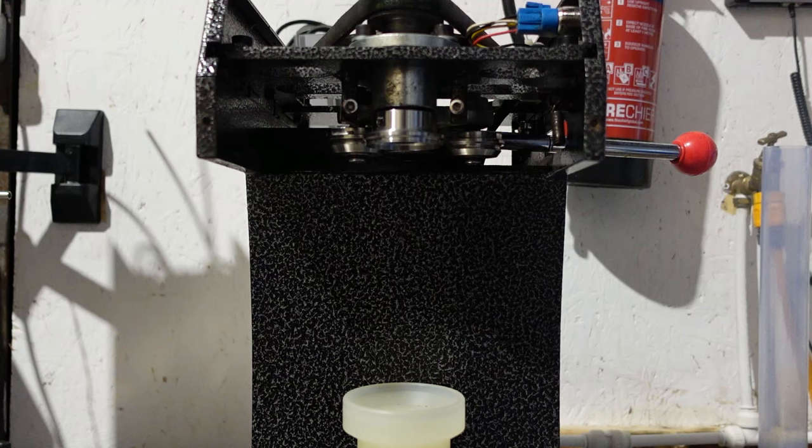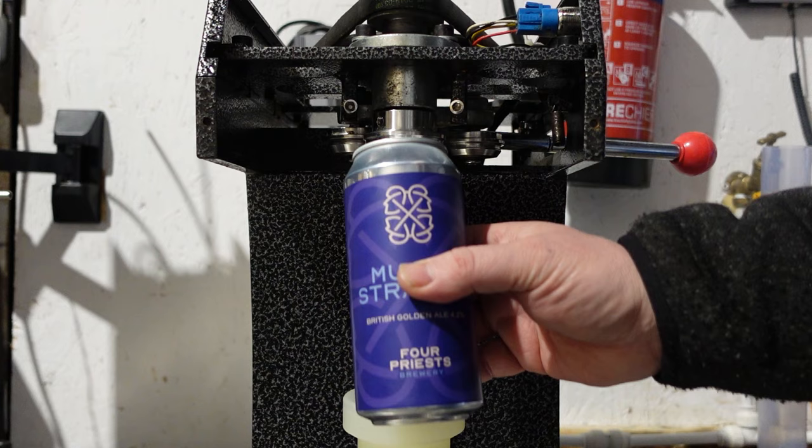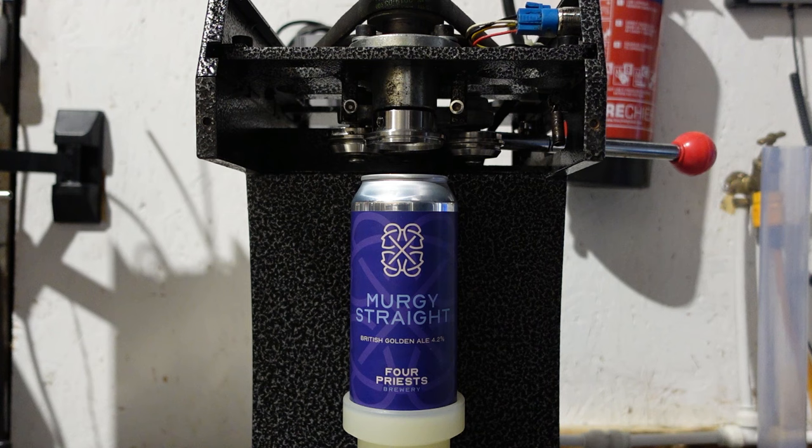That should be enough now. Here's one I prepared earlier. Okay. Let me show you. So normally the can goes in, we place the lid. This has already been seamed. Obviously we place the lid on top.